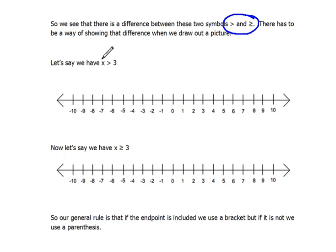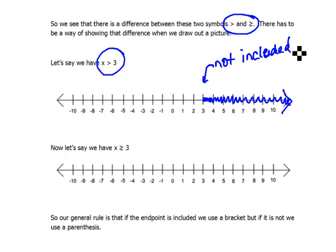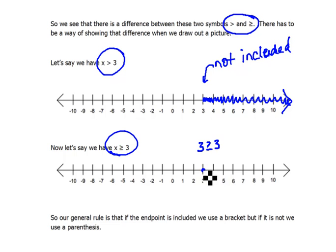So there has to be a way of showing that difference when we actually graph or draw its picture. For the statement x is greater than 3, everything just to the right of 3 would satisfy it, but we can't include the 3 itself because 3 is not larger than 3 — it doesn't work in that statement. But in the statement x is greater than or equal to 3, it does work, because 3 is greater than or equal to 3. So we would have everything to the right of that, including the 3 itself.